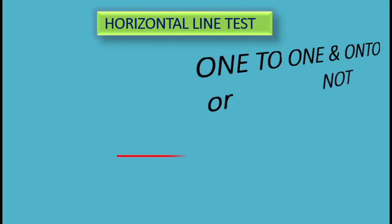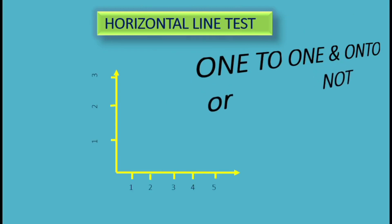A horizontal line can be drawn anywhere from the co-domain. The y-axis represents the co-domain, and the x-axis represents the domain. A horizontal line can be drawn anywhere from the co-domain.